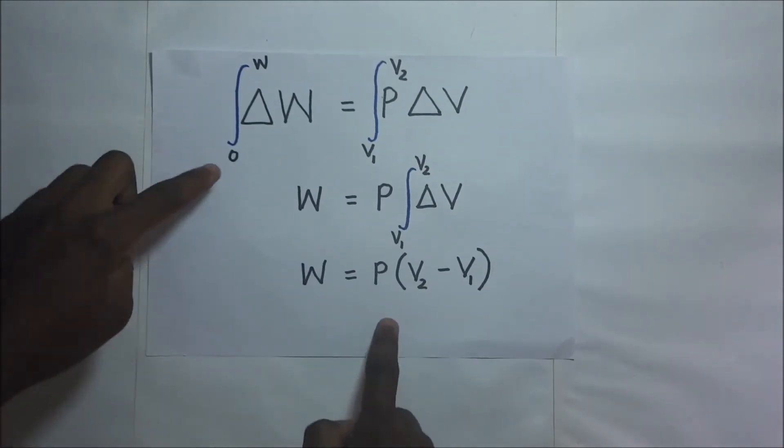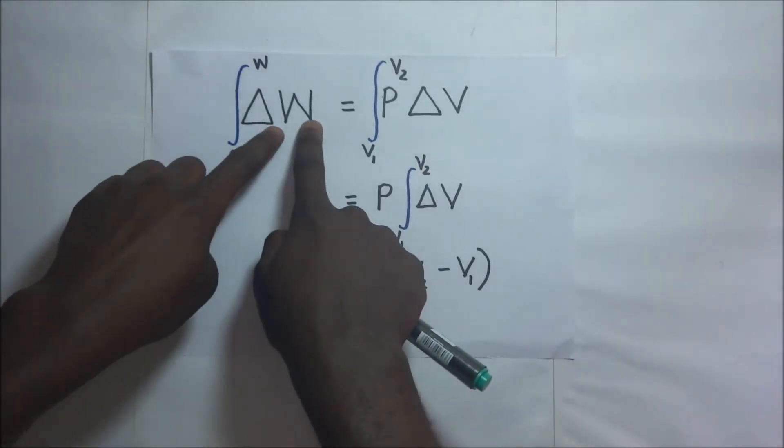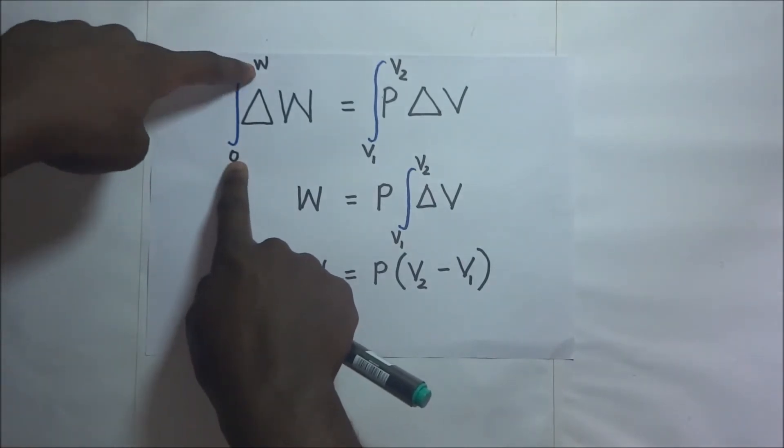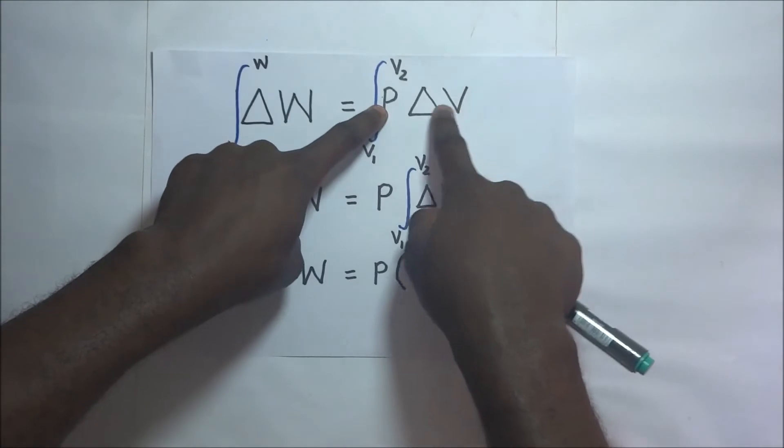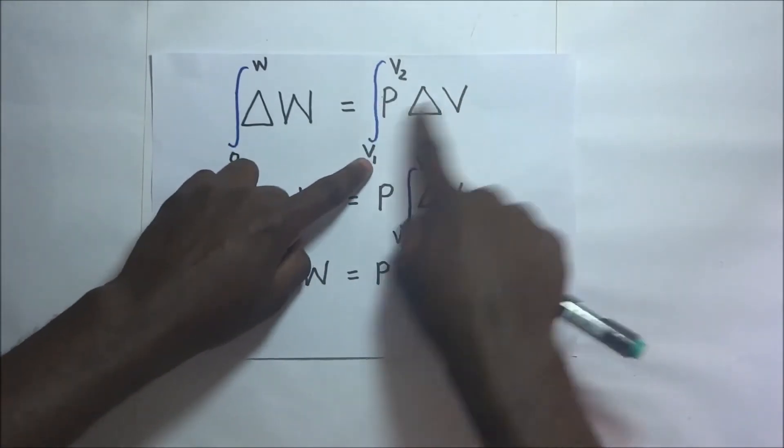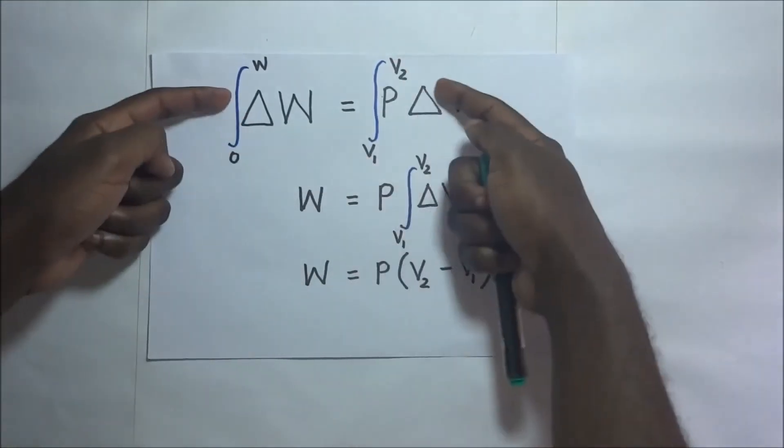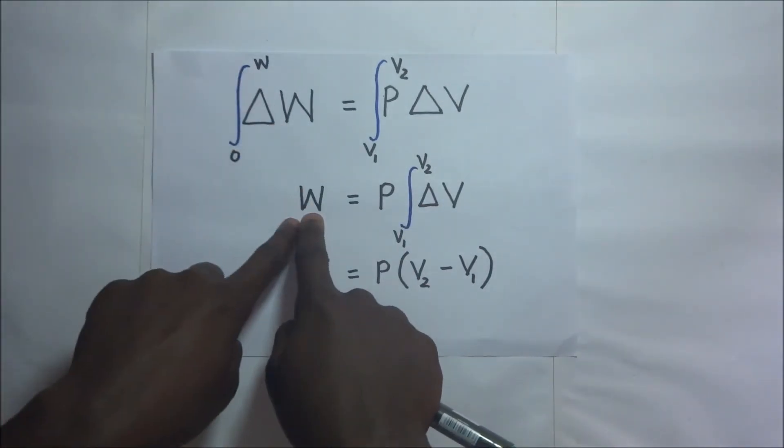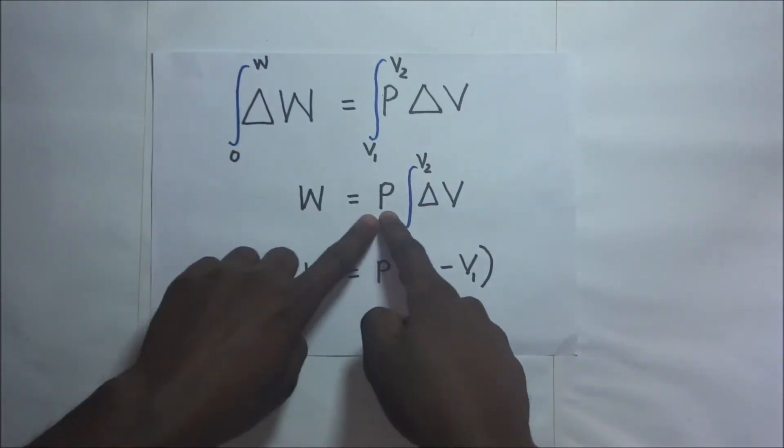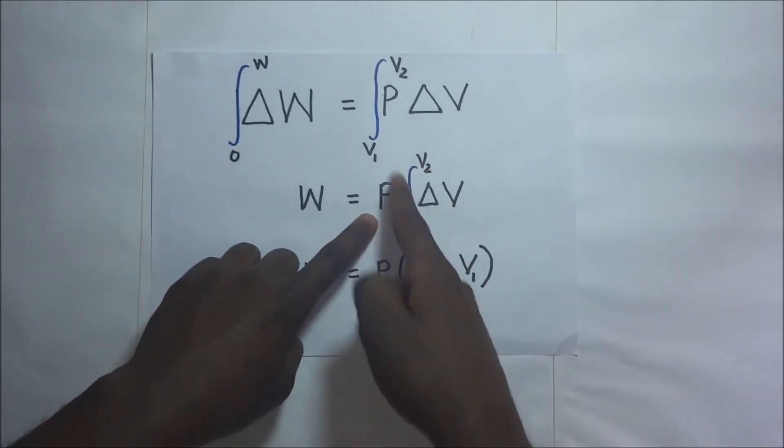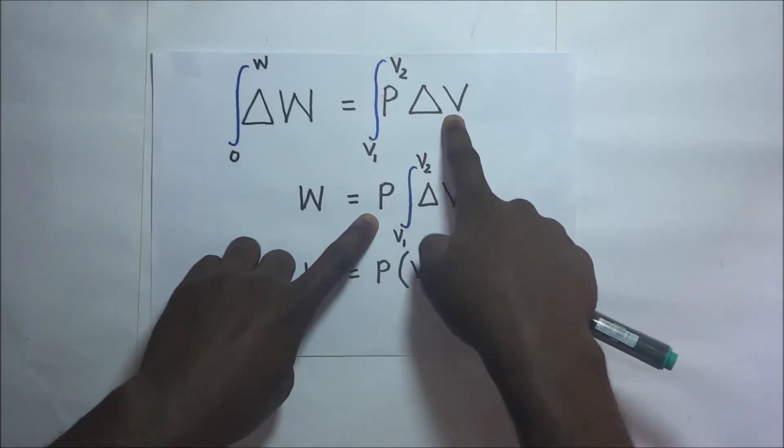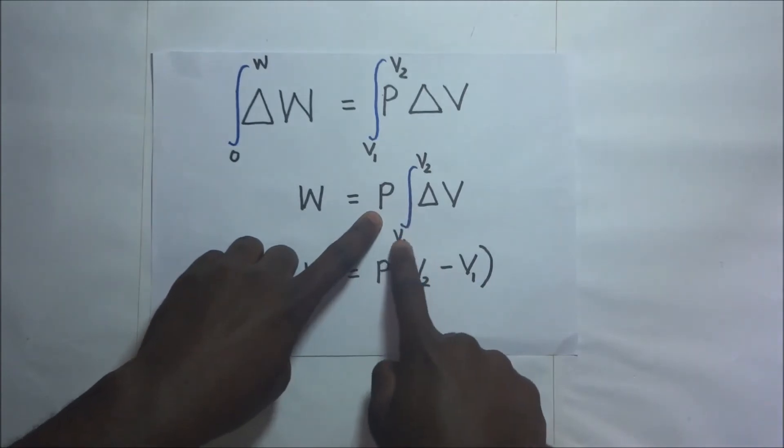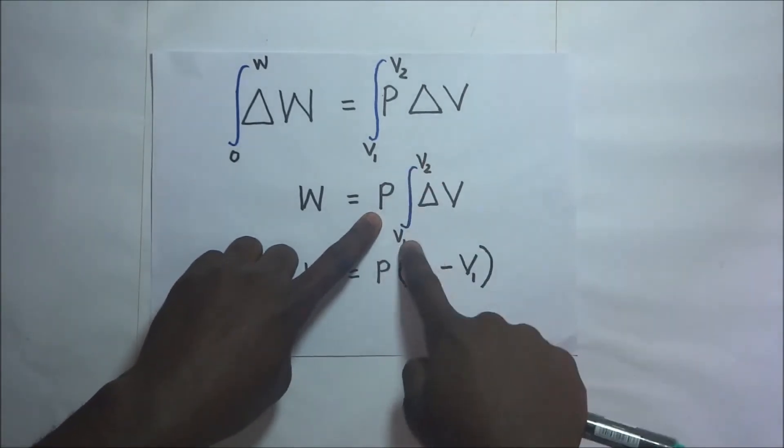So following through from our previous step, our integration here would mean that for this work to be done, it's moving from work when it was zero to W capital W. And we are integrating P times change in volume, the small change in volume. This volume is changing from V1 to V2. This gives us W is going to be equal to P times the integral. We bring P outside because P is a constant and we are integrating with respect to V.